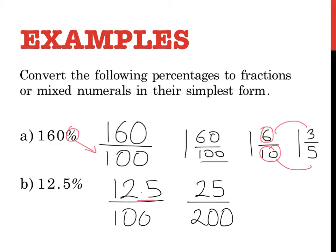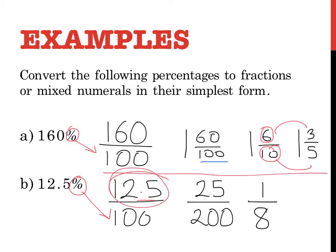You have to remember to write it in its simplest form. 25 and 200 are divisible by 25. 25 goes into itself once, and it goes eight times into 200. So always make sure you change the percentage sign into a denominator, always simplify, and if you get a decimal, always convert it so it's not a decimal, and then simplify.